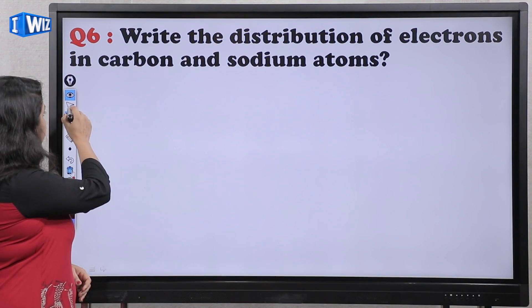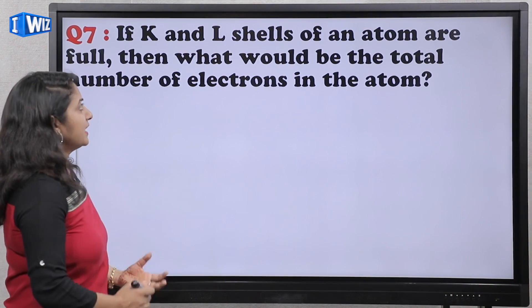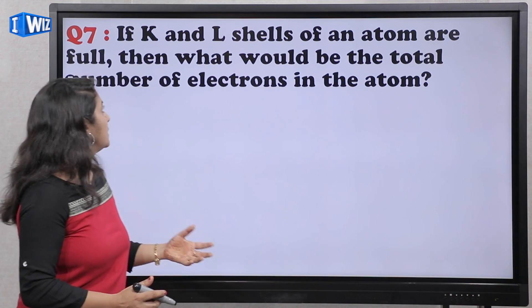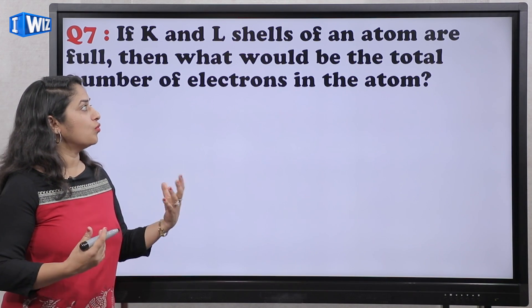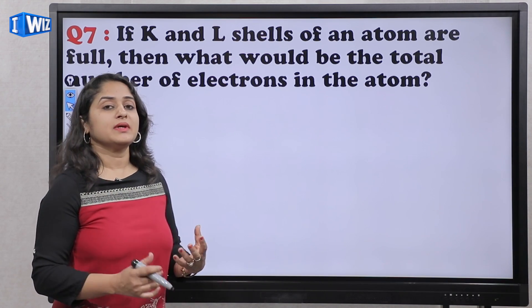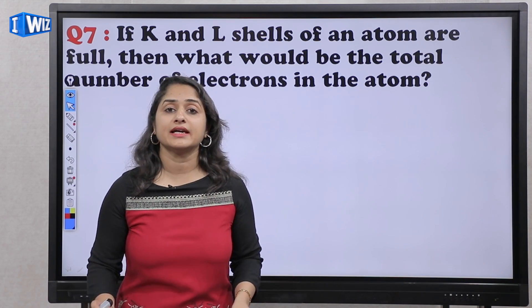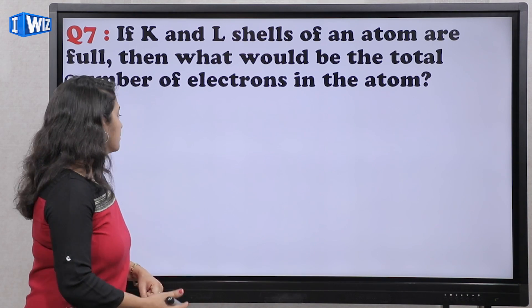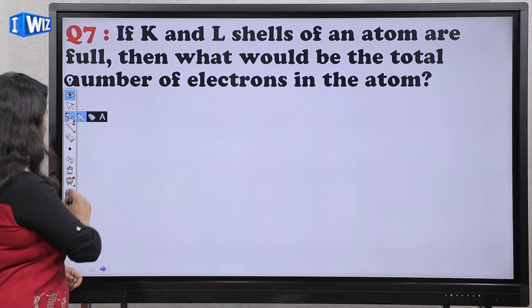Next question is: If K and L shells of an atom are full, then what would be the total number of electrons in the atom? Ki agar kisi bhi atom ki K or L shell full hai, completely filled hai, toh us mein kitne electrons hoongi, kya uski configuration hoogi?